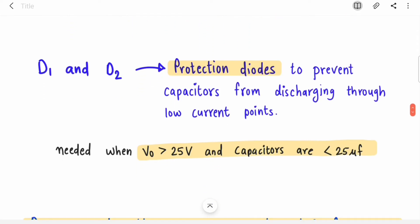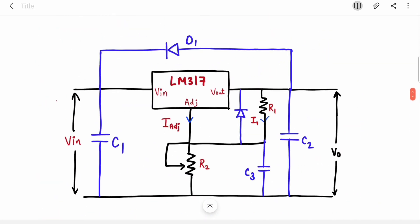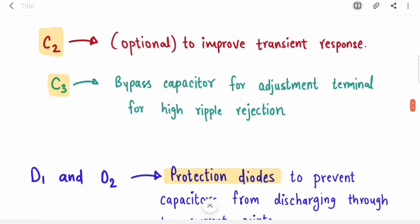These diodes are protection diodes to prevent capacitors from discharging through low current points. They are only needed when your output voltage is greater than 25 volts and capacitor values are less than 25 microfarads.